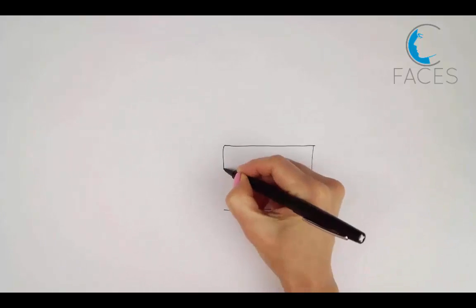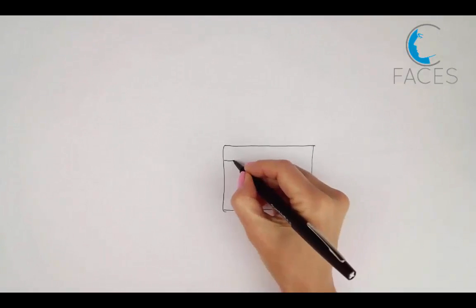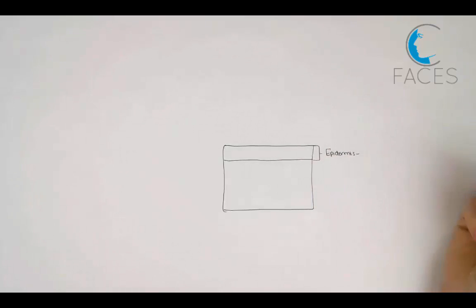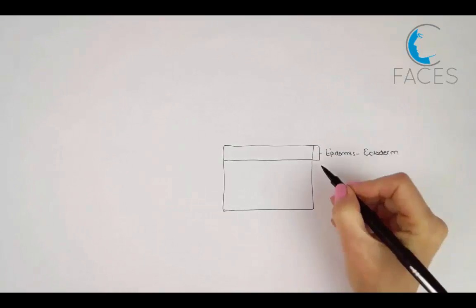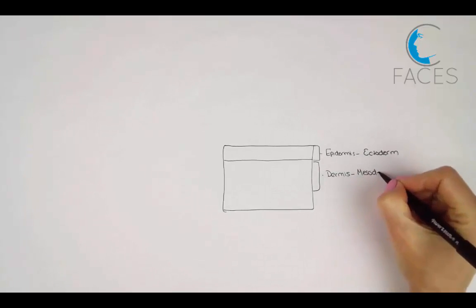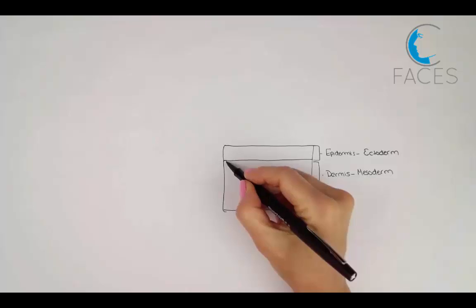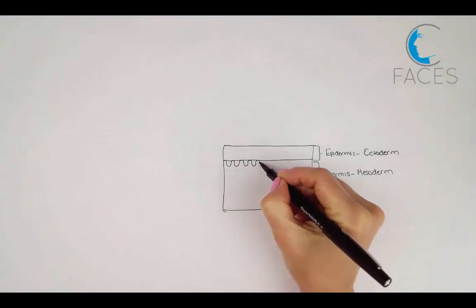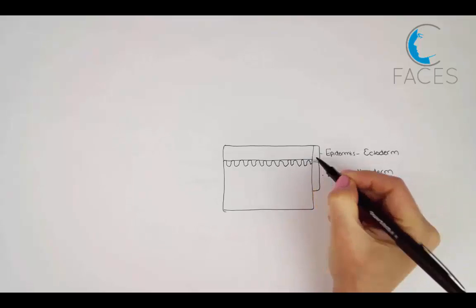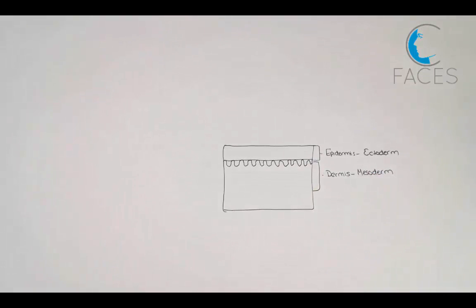The skin is comprised of the dermis and the epidermis. Embryologically, the epidermis arises from the ectoderm and the dermis arises from the mesoderm. These two layers have an irregular junction with a peg and socket configuration. The dermal papillae interdigitate with the epidermal ridges, and this arrangement provides greater surface area contact and better adhesion of the two layers.